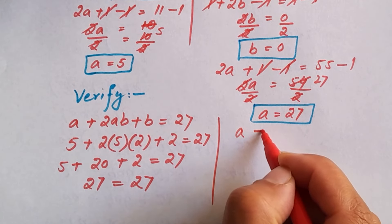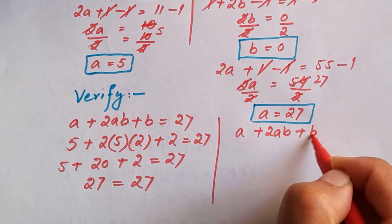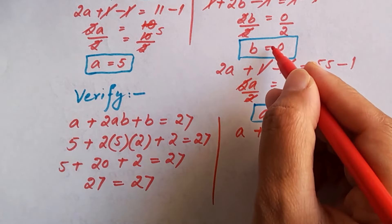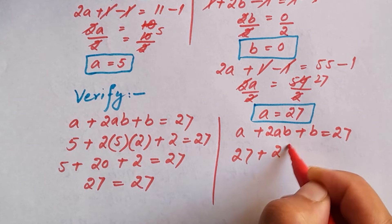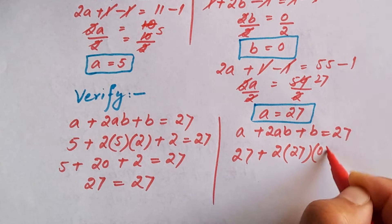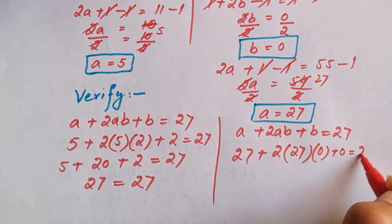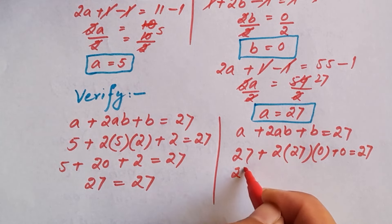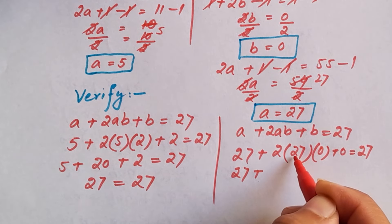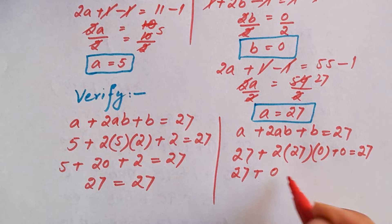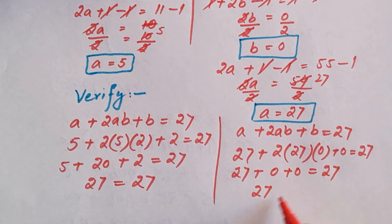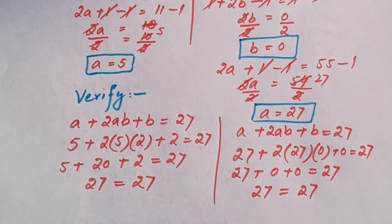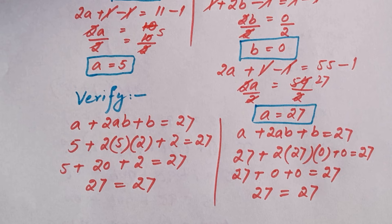Now checking the second set of values: b equals 0 and a equals 27. Substituting: 27 plus 2 times 27 times 0 plus 0 equals 27. Since 2 times 27 times 0 equals 0, the left-hand side equals 27, which matches the right-hand side. These values are also correct and satisfy the equation.